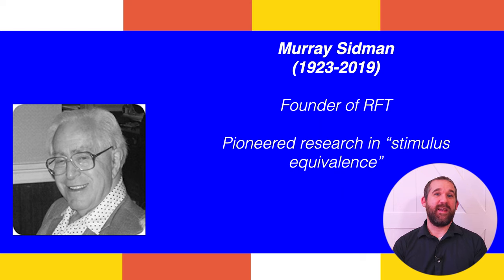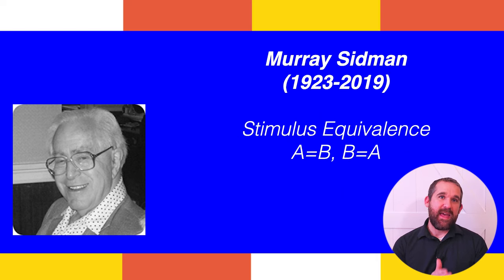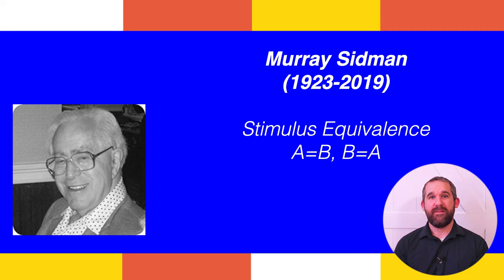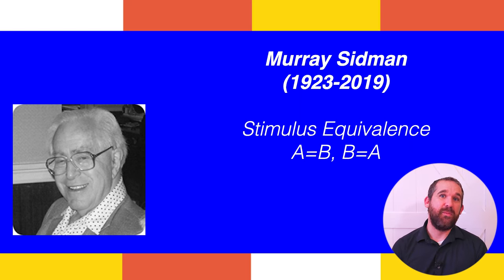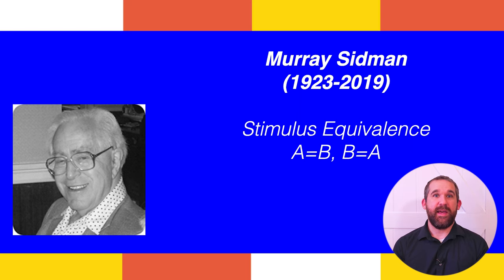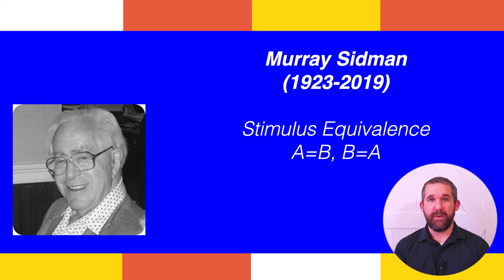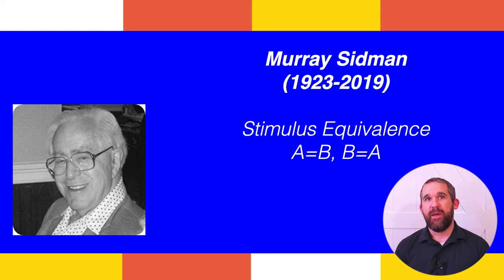Murray Sidman is the father of RFT and his work in the 1970s began with a breakthrough in understanding language acquisition which was named stimulus equivalence, written as A equals B, B equals A. This simple equation showed that learning language could occur by teaching the contextual cue 'same' or 'equal,' resulting in new learning taking place. This was tested with low verbal adults with learning disabilities, children with autism, and with young children learning to speak. Behaviorists at the time were especially excited because this seemed to show that language and thought were behaviors learned through operant conditioning or consequences in the environment.